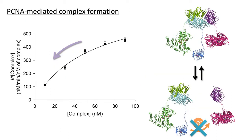However, the apparent specific activity of this complex strongly depends on the complex concentration, because the PCNA3-P450cam fusion protein is easily dissociated from the complex at low protein concentrations. This means the three fusion proteins don't fully form the heterotrimeric complex.